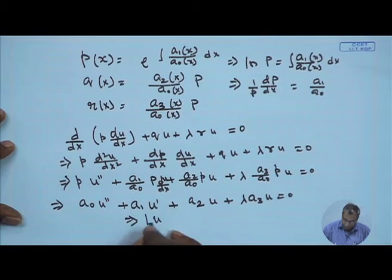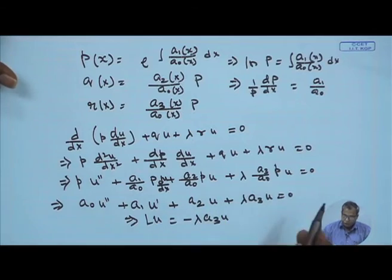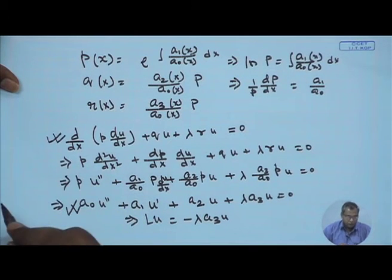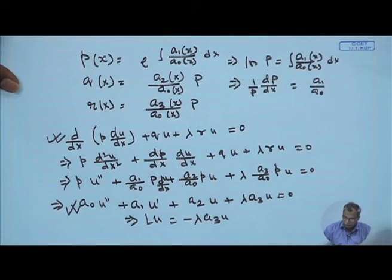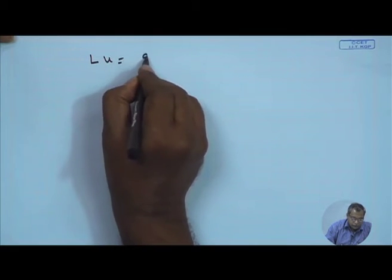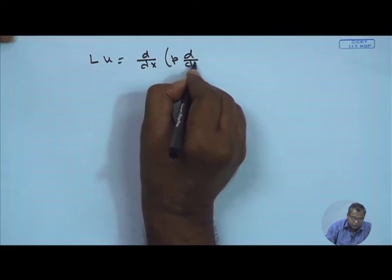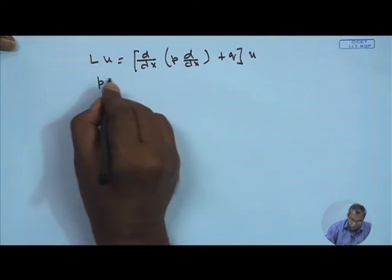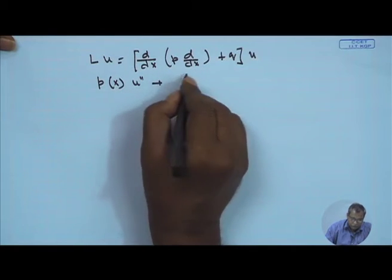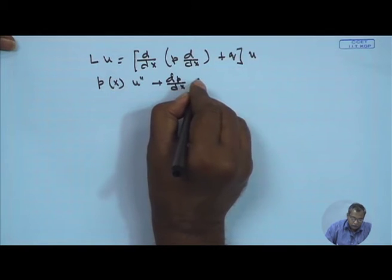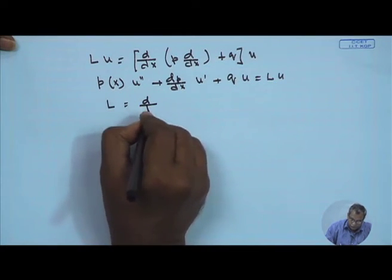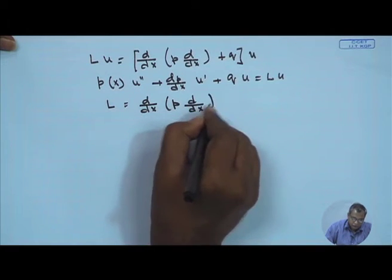These two equations are identical, giving Lu = -λa₃u. The operator L now becomes d/dx[p d/dx] + q, so L = d/dx[p(x) d/dx] + q(x), confirming the Sturm-Liouville form.